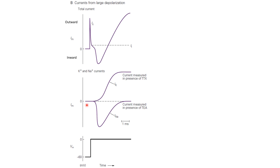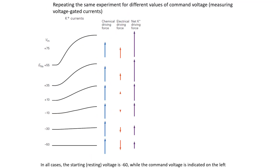We can see that the sodium channels open sooner and then also start to close, which is why that current increases and then decreases with time. Whereas the potassium channels open more gradually and then remain open. We can repeat the same experiment for different values of the command potential — each time starting with the resting membrane potential of minus 60 millivolts and then taking the membrane to different command potential values. At each value, we can observe the potassium and sodium currents using the pharmacological agents as described.